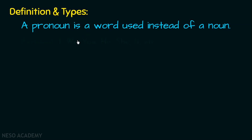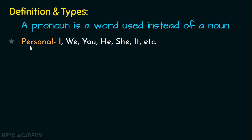The first type is personal pronouns. These are I, we, you, he, she, it, etc. These are all those words which are used to talk about someone or something very specific or very particular.